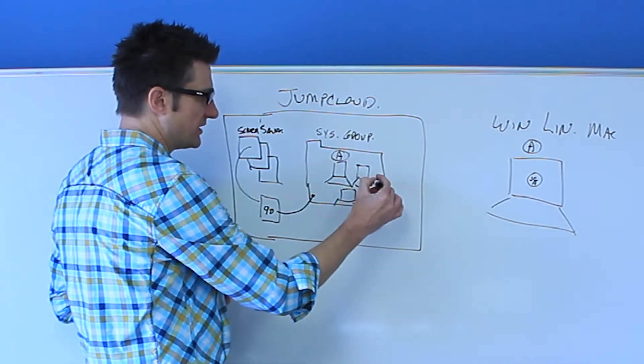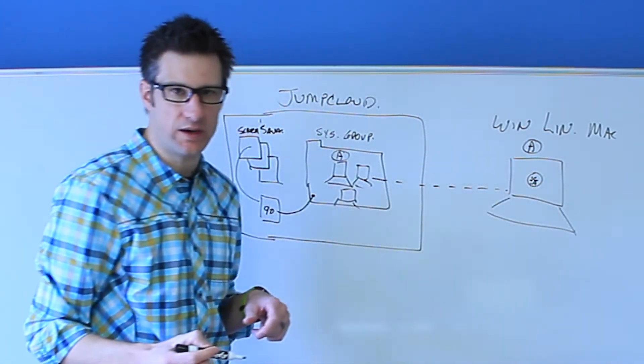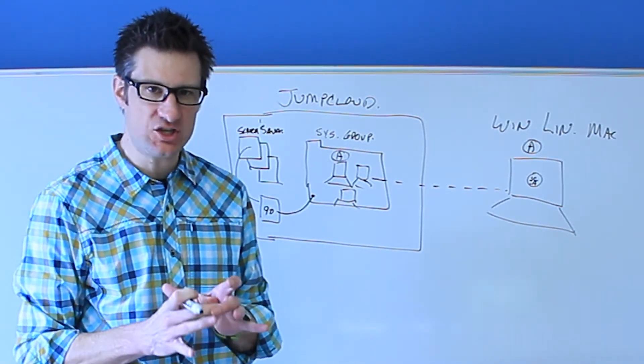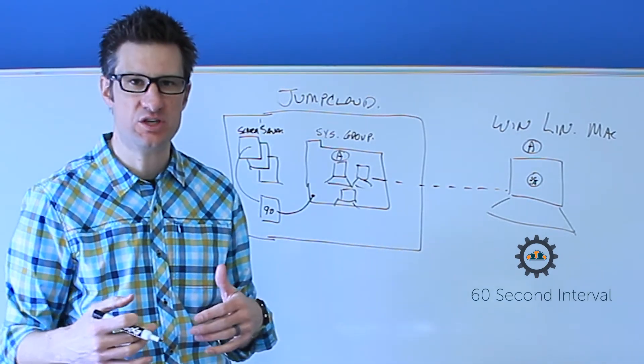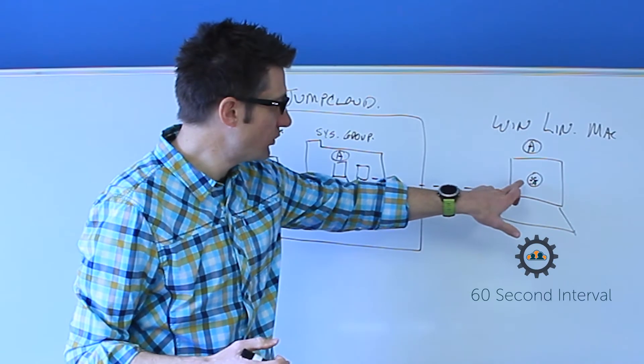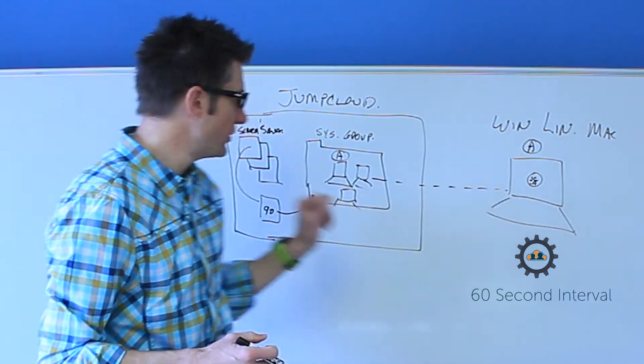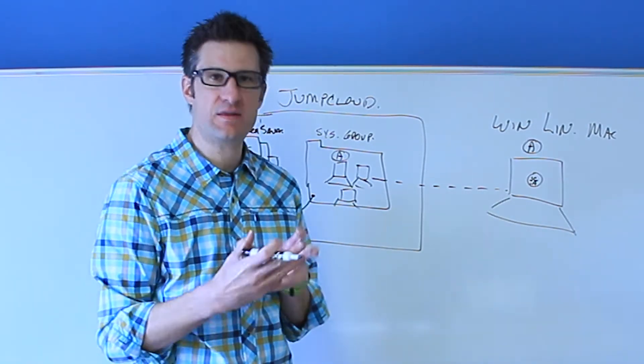We will communicate those instructions and land the policy on the endpoint. Just like any other normal operation, the agent rotates on a 60-second interval to pick up user changes, password changes, and of course it will pick up these policy changes. So policies are then distributed to the machine, and there they live.